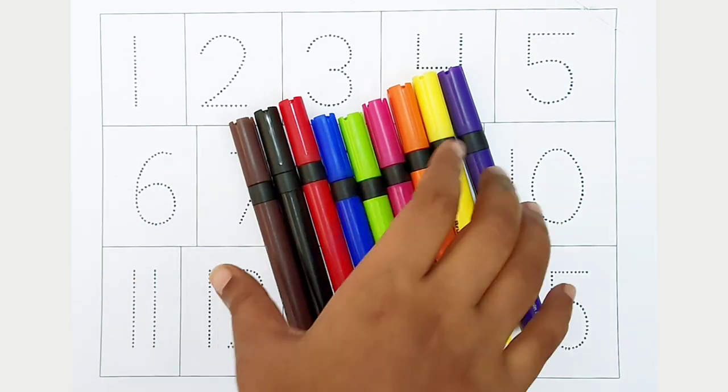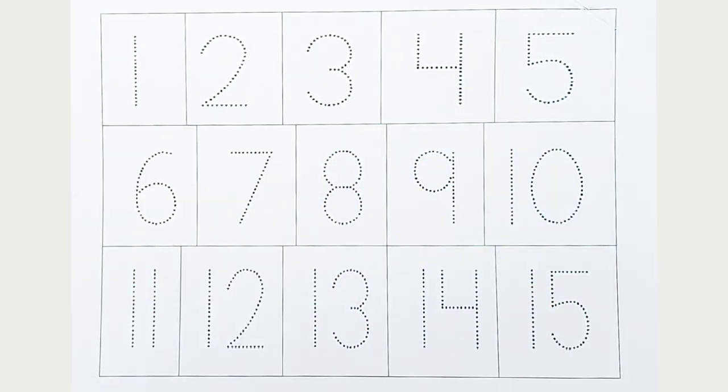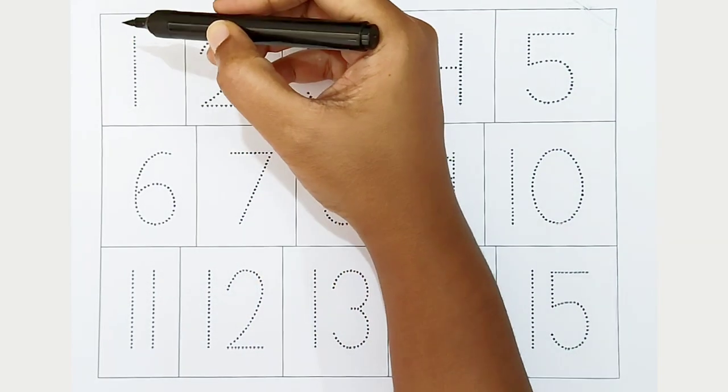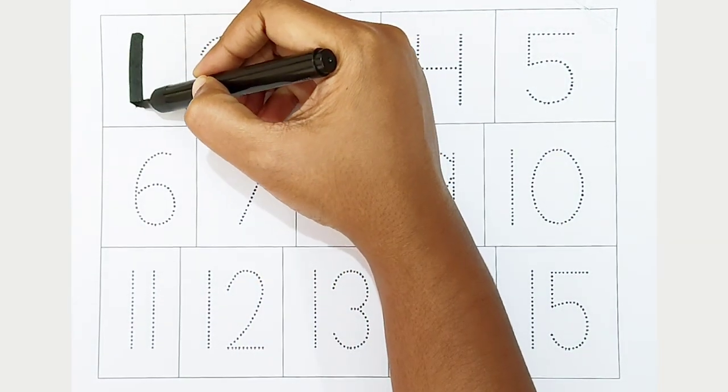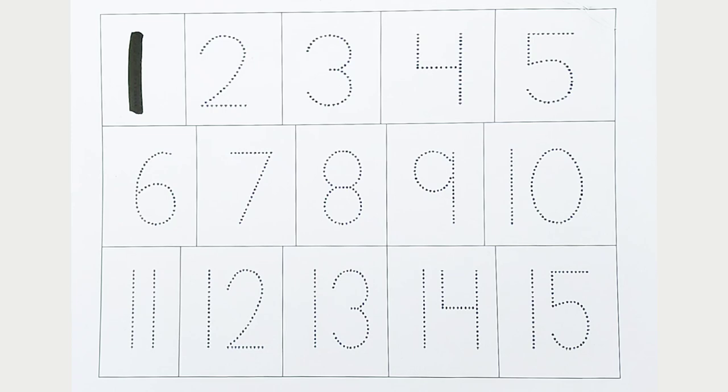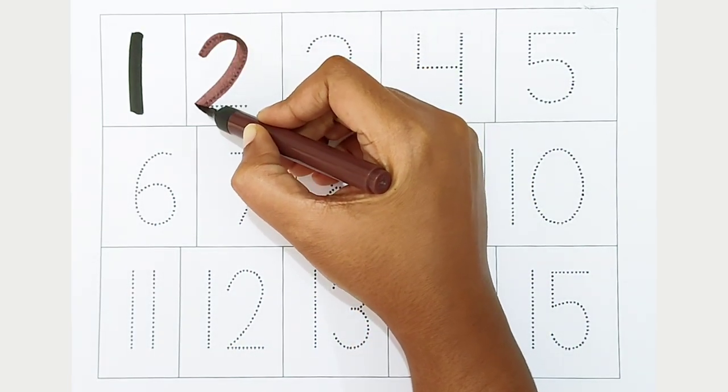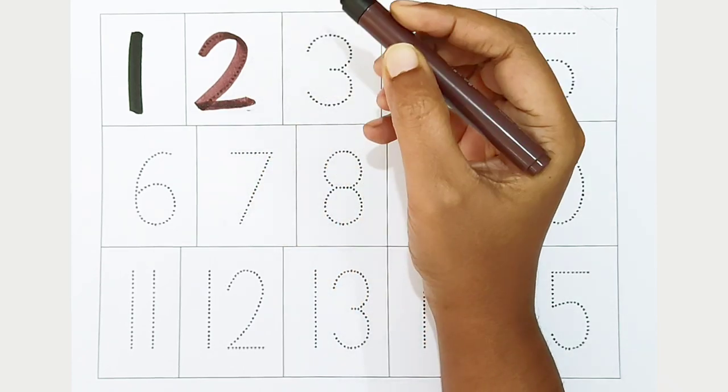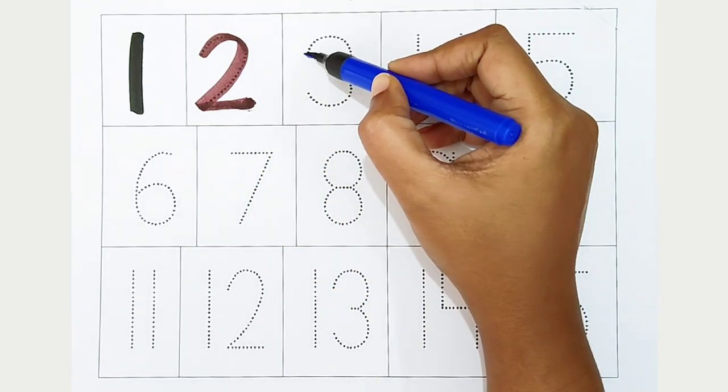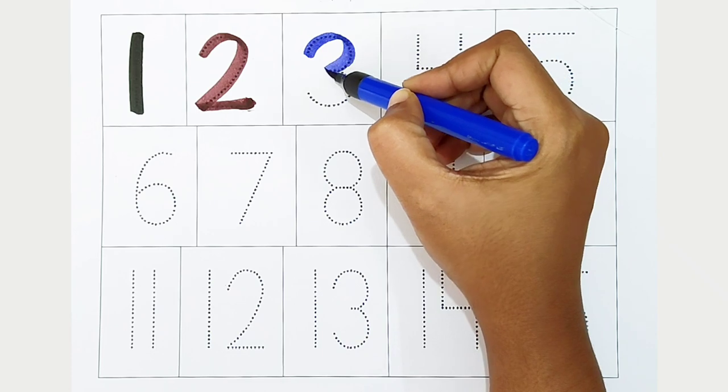Hi kids, today we can learn the numbers from 1 to 15. Let's begin. 1, black color. 1, black color. 2, brown color. 2, brown color. 3, dark blue color. 3, dark blue color.